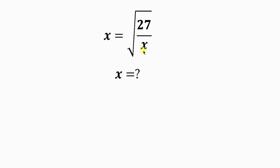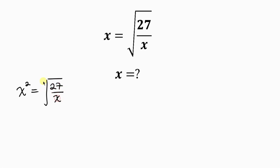Our first step is not to cross multiply both sides because of this square root. So we're going to get rid of this square root first before we can cross multiply. Let's take the square of both sides in order to get rid of this square root. So I'll square both sides — the left is x squared, and the right hand side is the square root of 27 over x, which I'm also going to square.